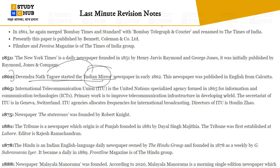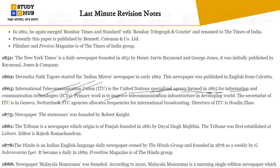In 1865, the ITU — International Telecommunication Union — was formed as a United Nations specialized agency. Its primary work is to improve telecommunication infrastructure in the developing world. Its secretariat is in Geneva, Switzerland. The ITU allocates frequencies for international broadcasting. Its director is Houlin Zhao.